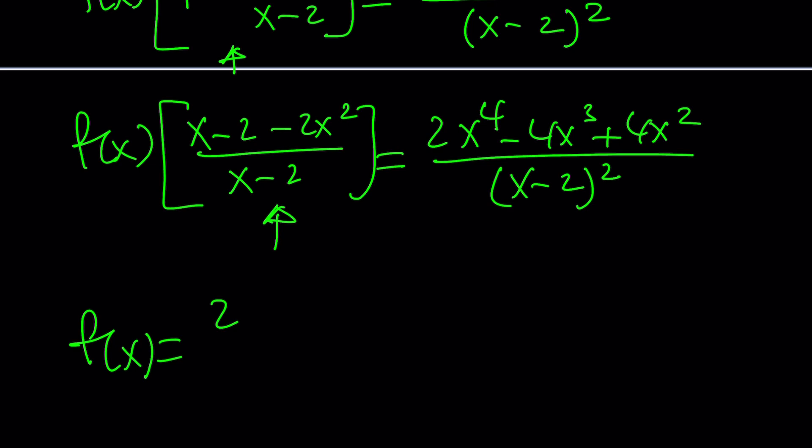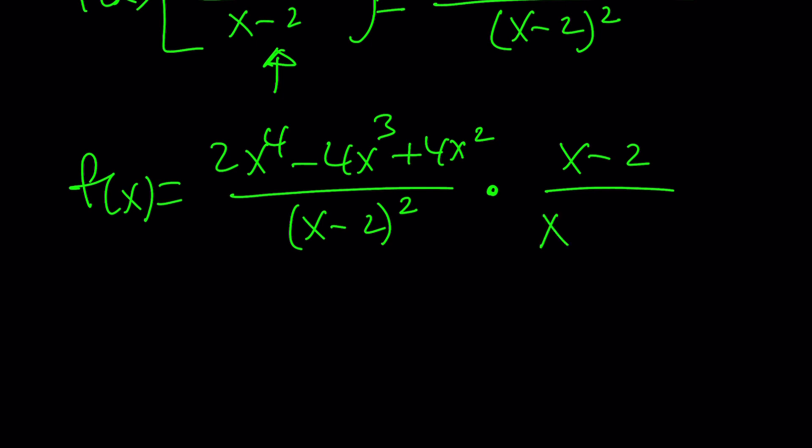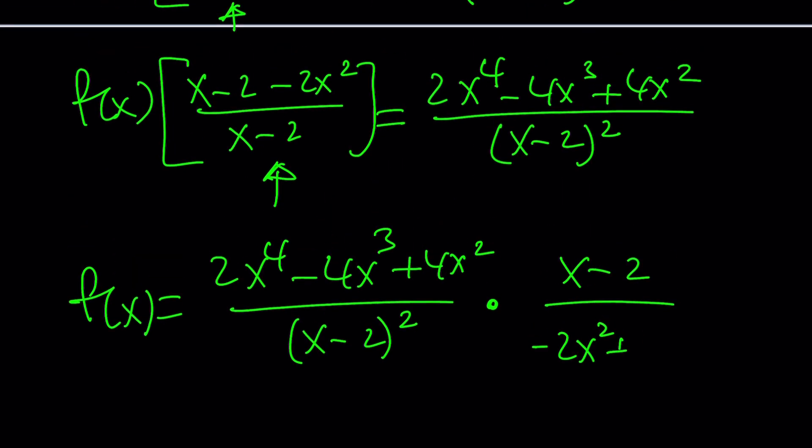Now, obviously, we're going to flip and multiply to divide by this. So f of x is going to be 2x to the fourth minus 4x cubed plus 4x squared divided by x minus 2 quantity squared times the reciprocal, which is x minus 2 over negative 2x squared plus x minus 2. If you want to write this in standard form, that's fine. Usually we like to do that. Negative 2x squared plus x minus 2, even though it doesn't look that good. Now we can go ahead and simplify this a little bit. Of course, x should not be 2 in this case, and it's not going to be anyways because it's undefined.